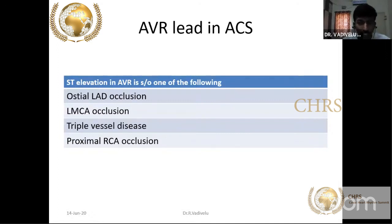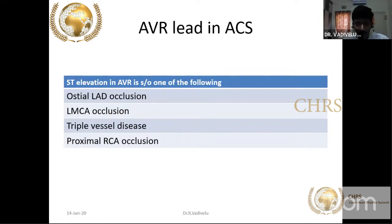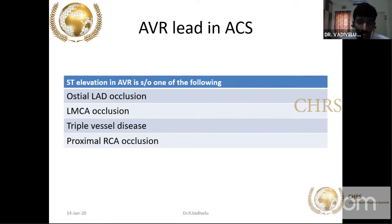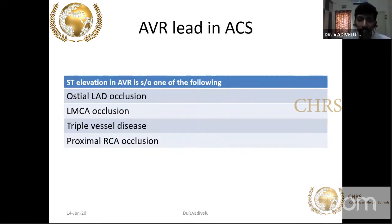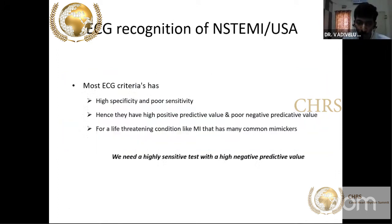Coming to the AVR lead — it is called the orphan lead because it has no contiguous lead. But AVR is a very important lead because ST segment elevation in AVR implies ostial LAD or left main coronary artery occlusion. ST elevation in AVR can be seen in triple vessel disease, and also in proximal RCA occlusion.